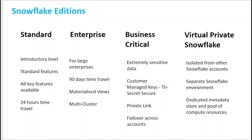That brings us to the third edition, which is the Business Critical edition. This is used for extremely sensitive data — if you have a lot of PII data and you really don't want anything to be exposed outside, this is the edition you can go for. It also provides encryption using customer-managed keys. If you want to bring your own keys, there is also a facility to have a private link. For example, if you're running this on AWS and transferring data from S3 to Snowflake, you can create a private link so the data is not transferred through the internet but through this private link. That's one of the most important features.